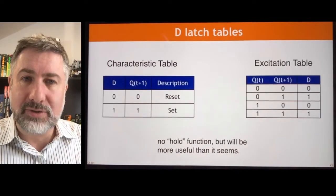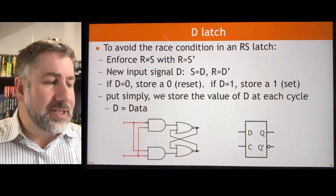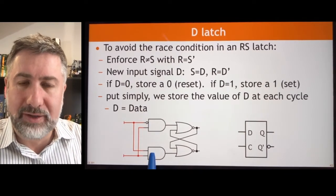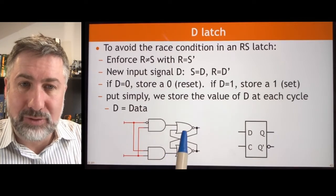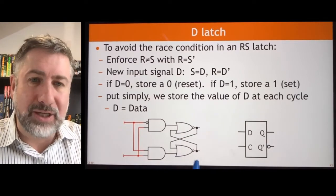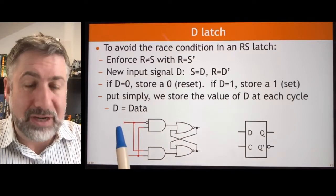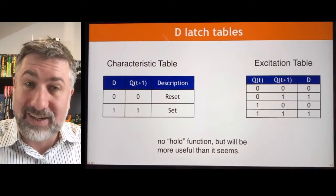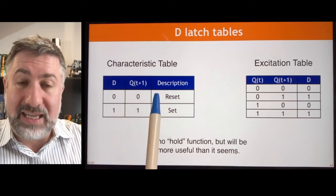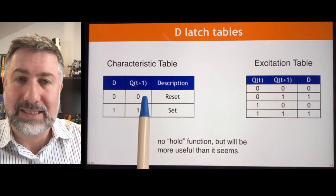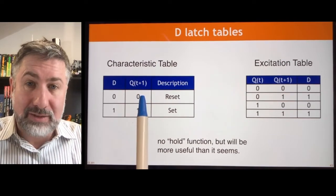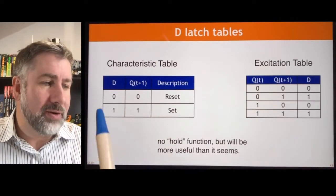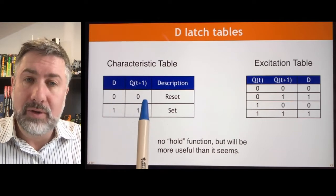Here are the characteristic table and excitation table for the D latch. The D latch uses an inverter between R and S so they always have to be different — there's no situation where R and S are both one. If D is one, we set the value to one; if D is zero, we reset the value to zero. The value stored is simply equal to whatever value is on the input. The characteristic table reflects this: if the input is zero, the next state is zero regardless of the current state. For a D latch, we always throw away the current state and store whatever is on D.